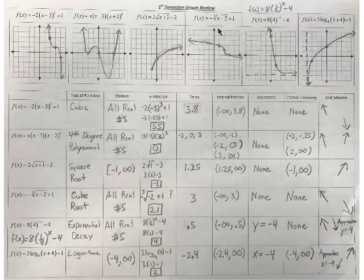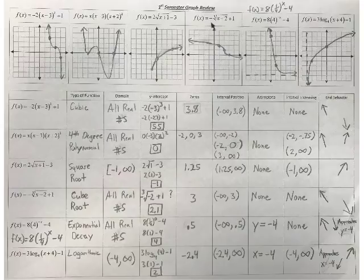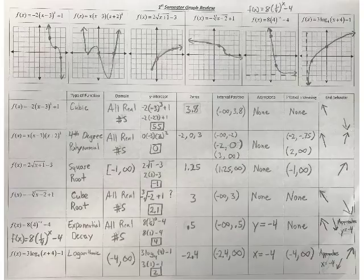Next one is this cube root. HK is 2, positive 1, so you're over 2, up 1. Your A value, if you look in the front, is negative 1, so when you go over 1, you drop 1. When you go the opposite direction, you're going to rise 1. It kind of looks like a square root, but then it has another square root going the opposite direction. Cube roots also grow or shrink very slowly.